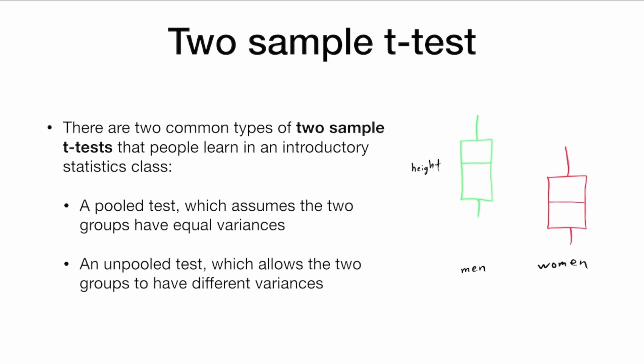A pooled t-test, which assumes the two groups have equal variances, and an unpooled t-test, which allows the two groups to have different variances.